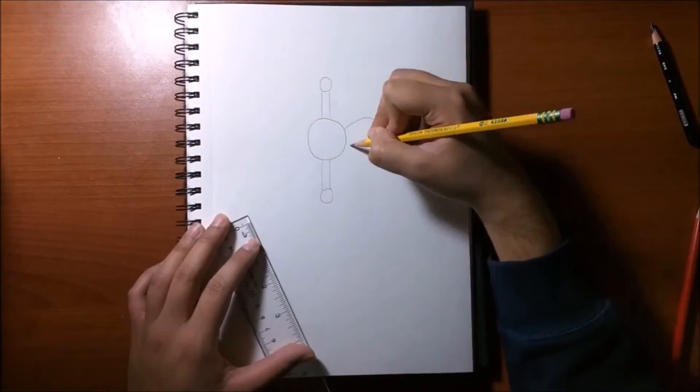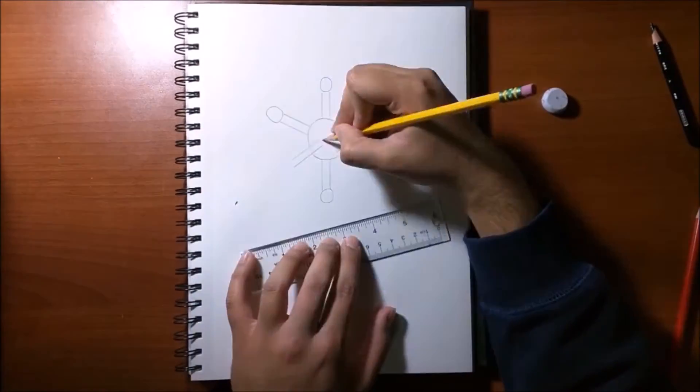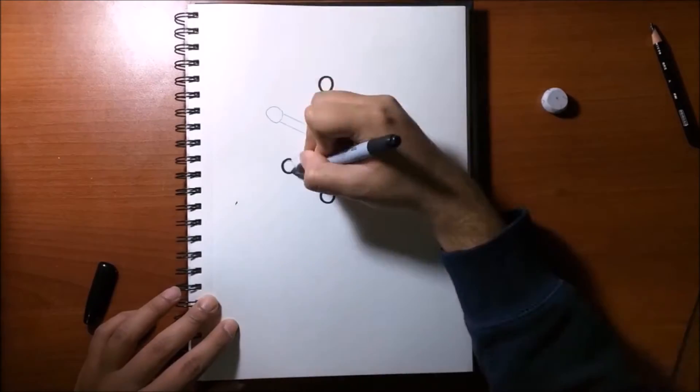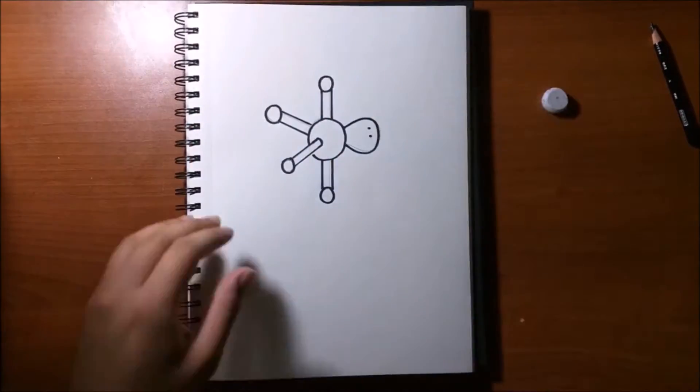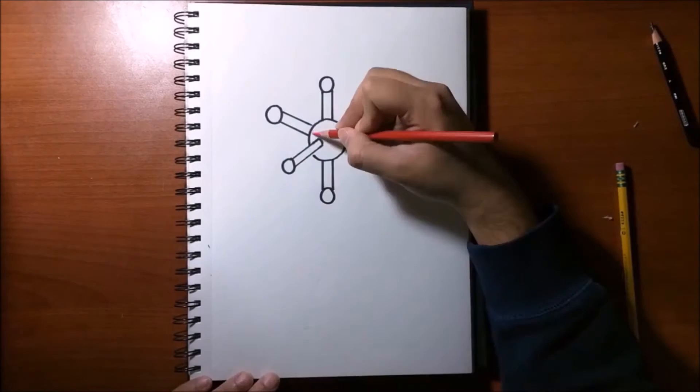Another shape part of the same class is the seesaw. This shape consists of a central atom attached to four other atoms and a single electron group. This shape is considered polar because it's non-symmetrical.